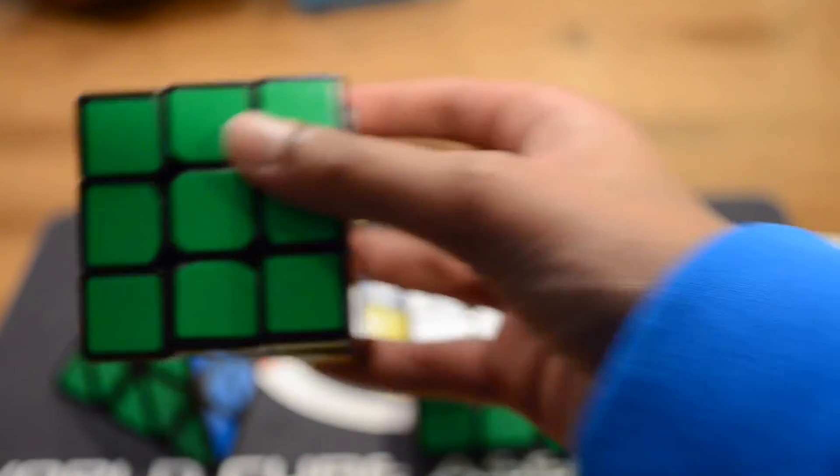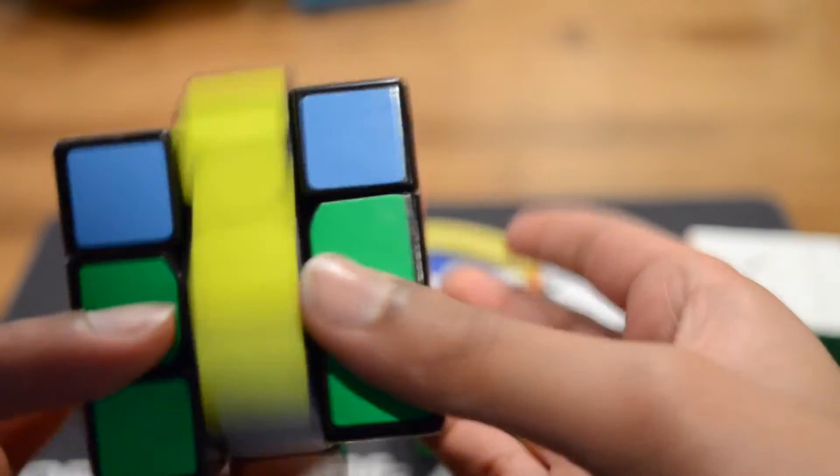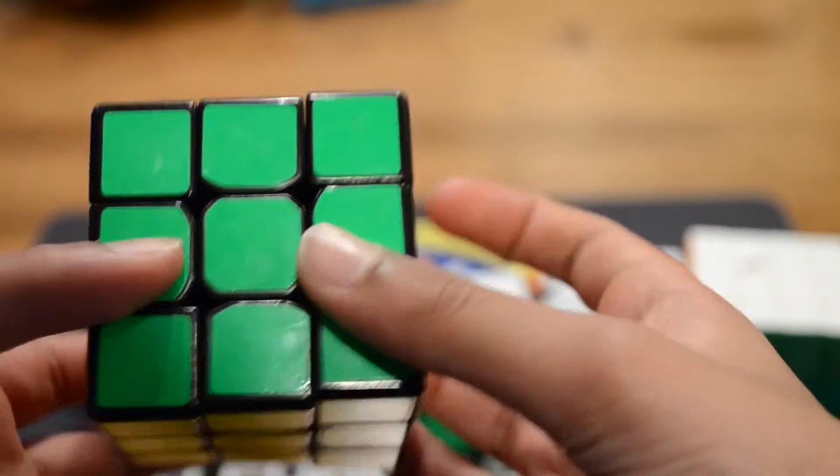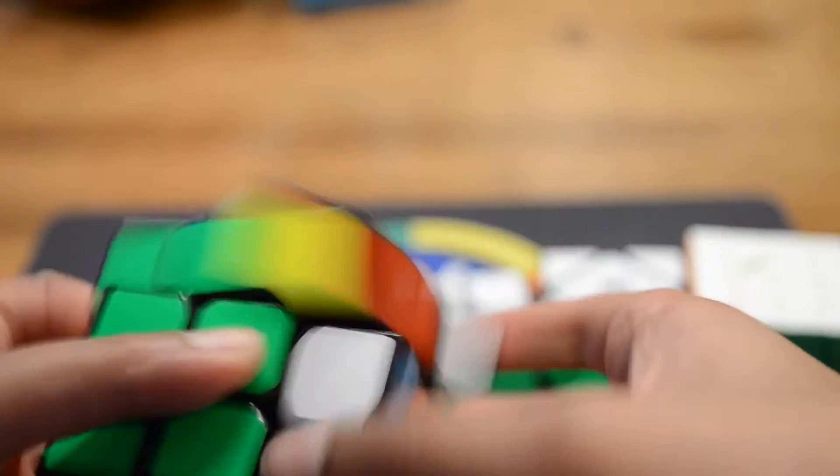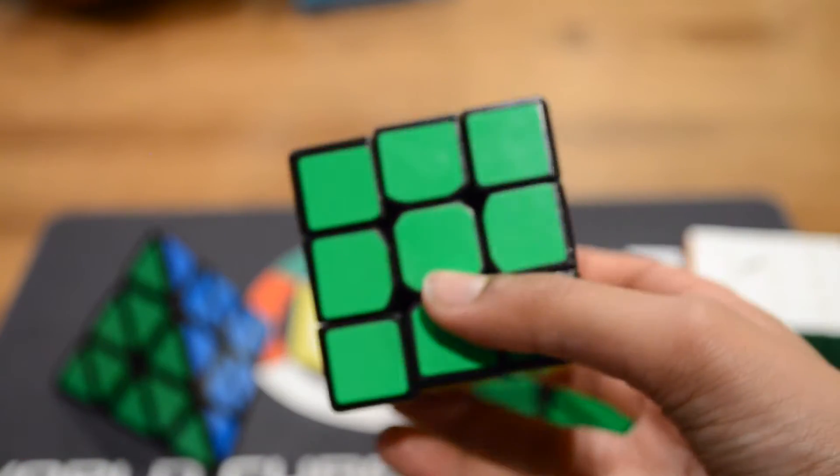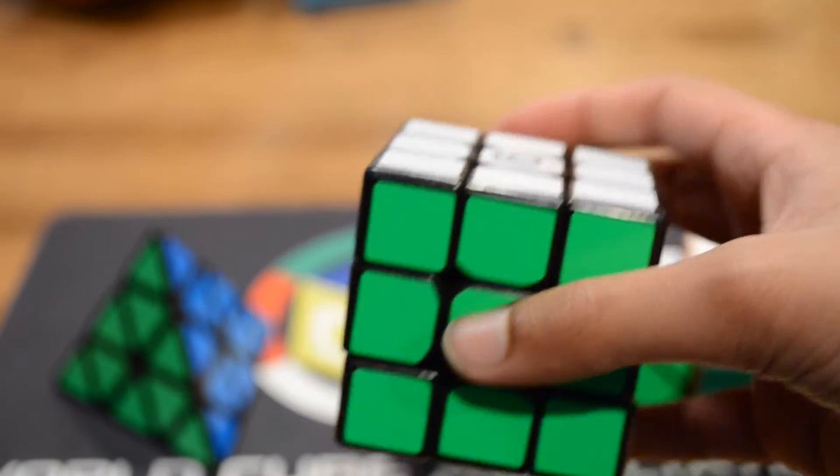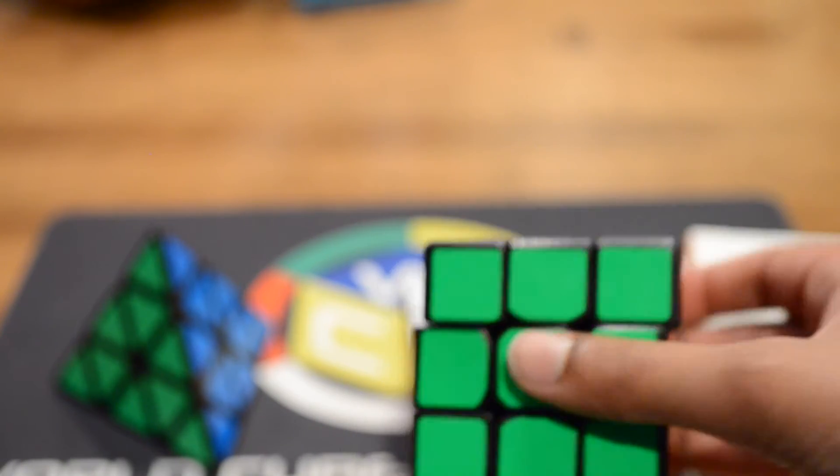Now on to 3x3. This is the MoYu Weilong. I want a sub 11.3 average and a sub 9 single because I think I'm capable of doing that. This is again the MoYu Weilong. I'm not sure if I already mentioned that. You can see my review on this as well.